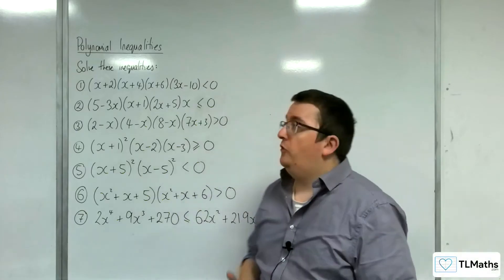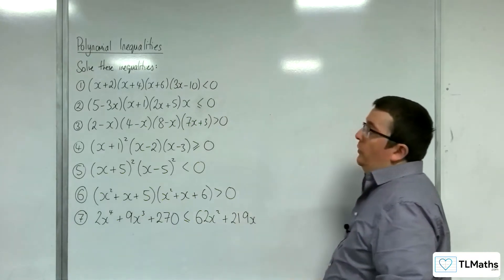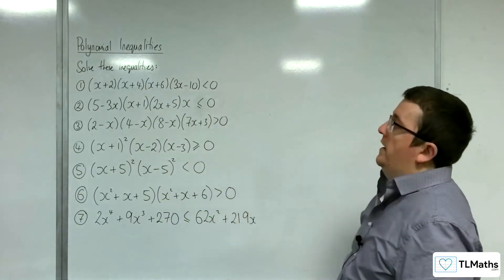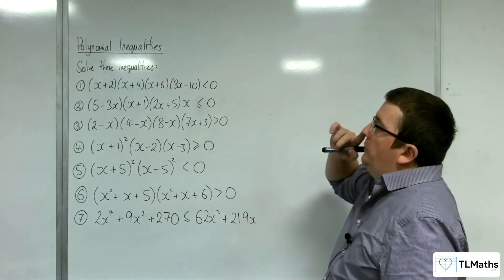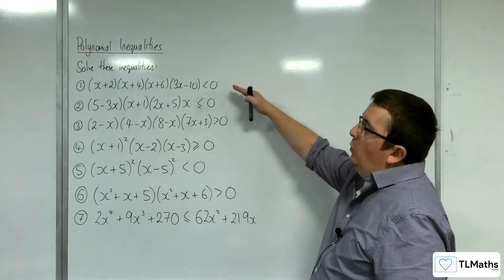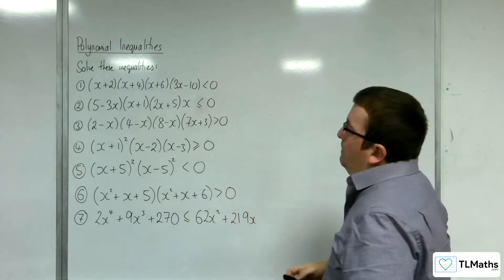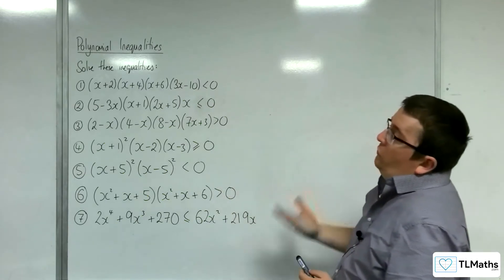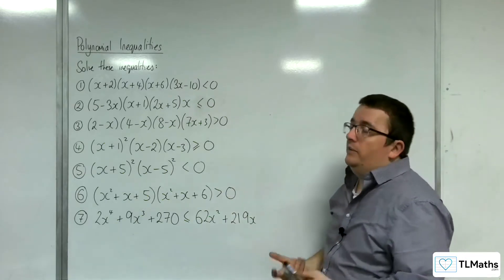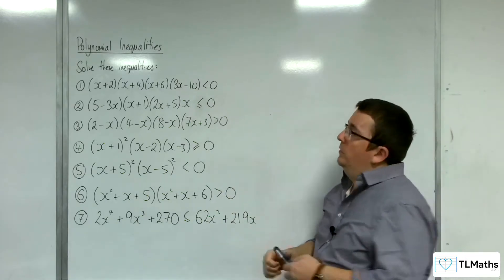In this video I'm going to go through some examples of solving quartic inequalities. Let's dive straight in with number 1: (x+2)(x+4)(x+6)(3x-10) is less than 0.